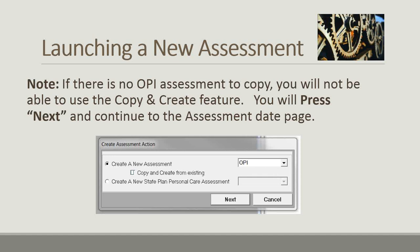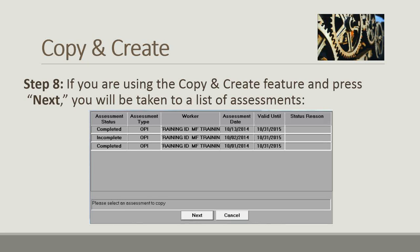If you decide to use copy and create and check that box, you'll be taken to a new pop-up listing other OPI assessments on this case. Remember, you can only use copy and create if there are other assessments — if there are none, you must create a CAPS assessment from scratch. In this example there are three past assessments: two complete and one incomplete. You would click to highlight the one you want to copy, most likely the most recent OPI assessment, then press next.